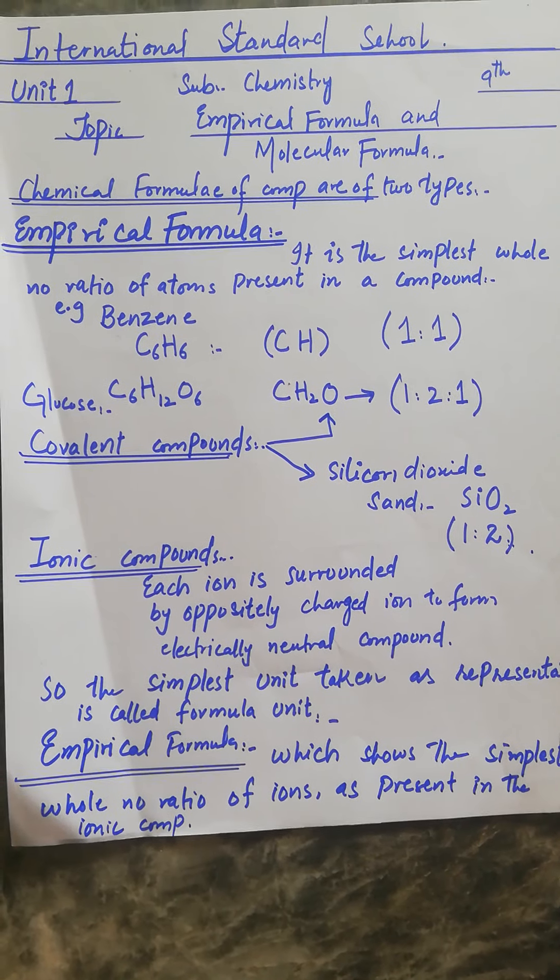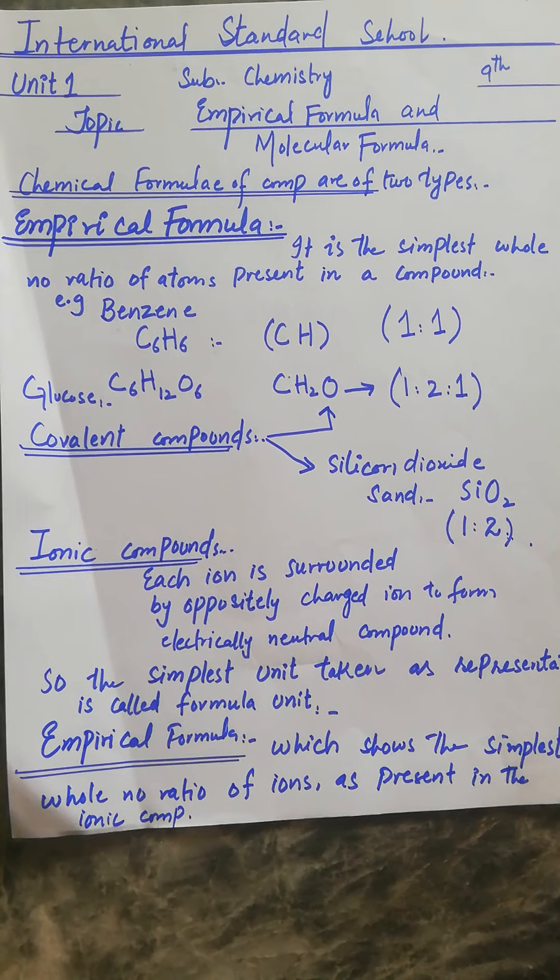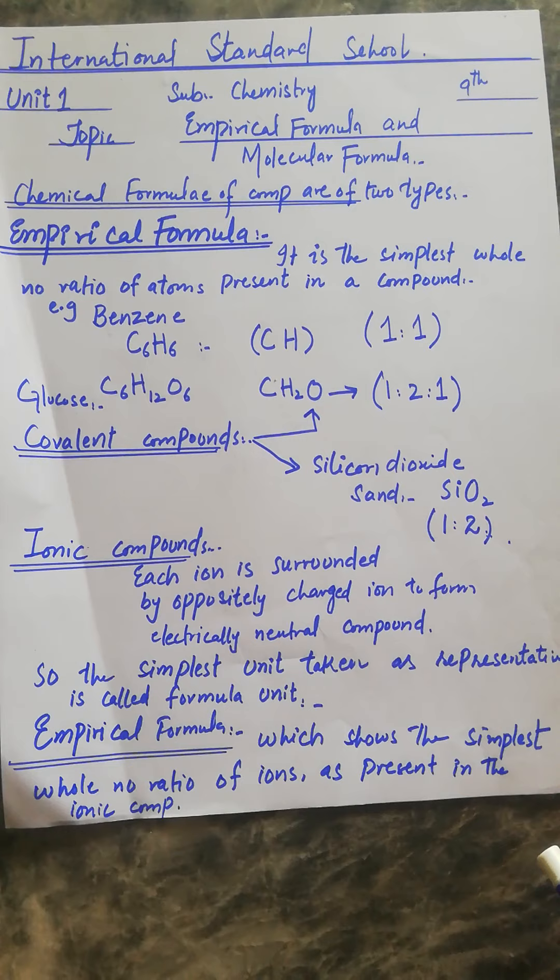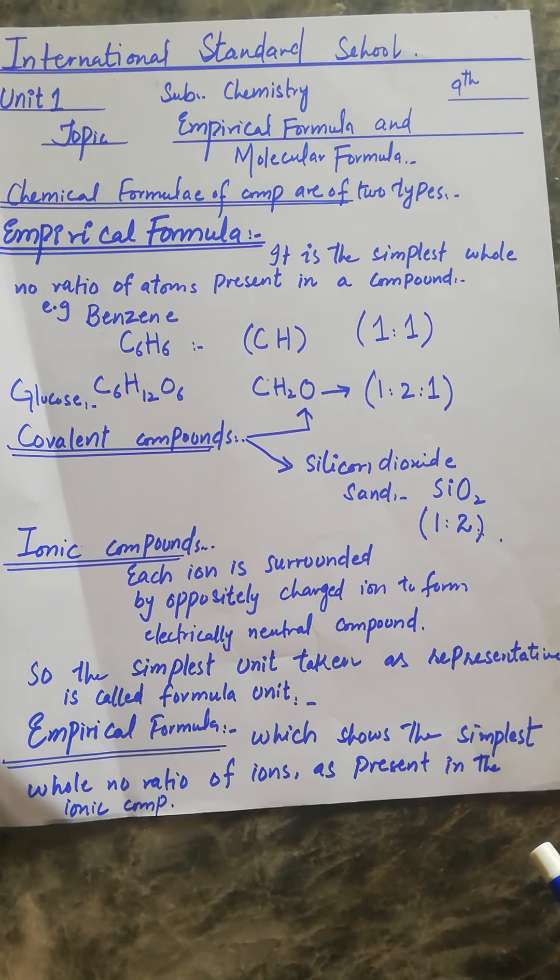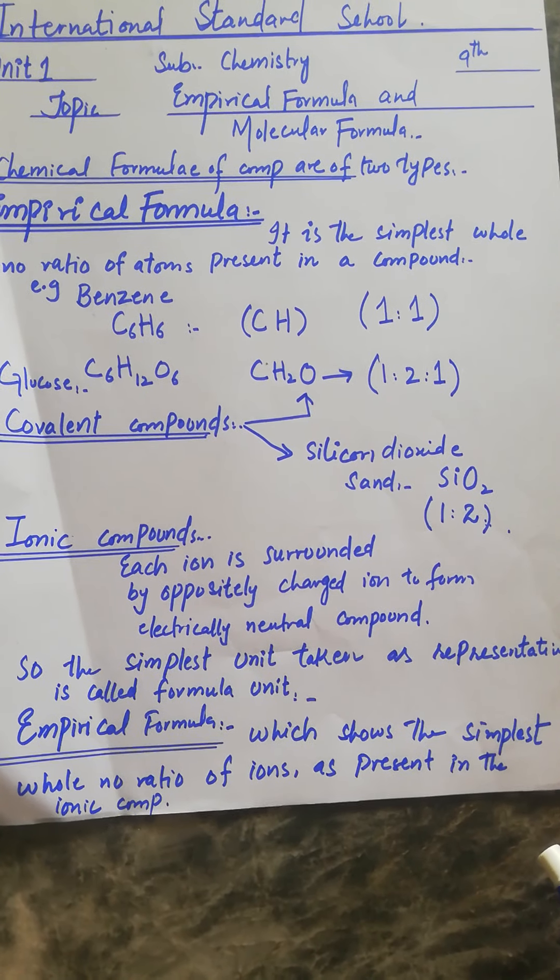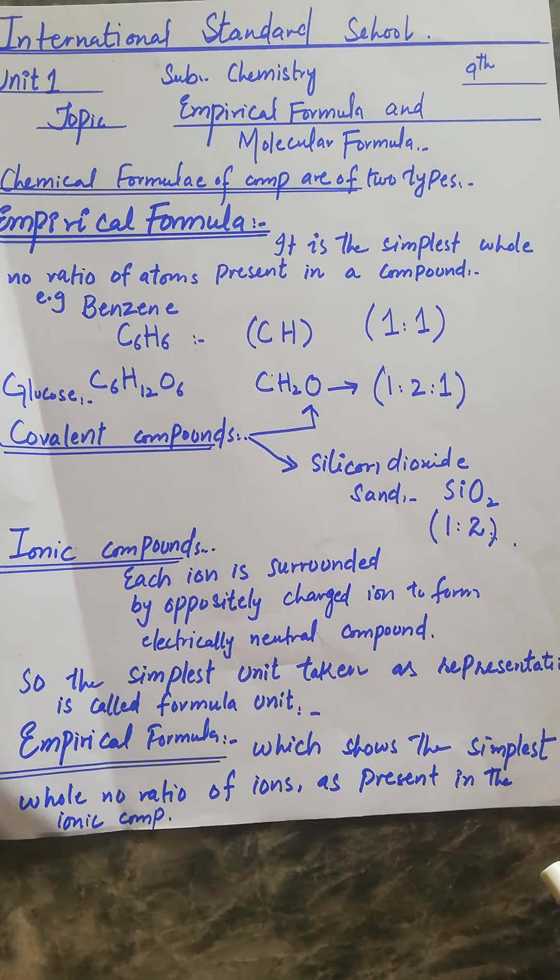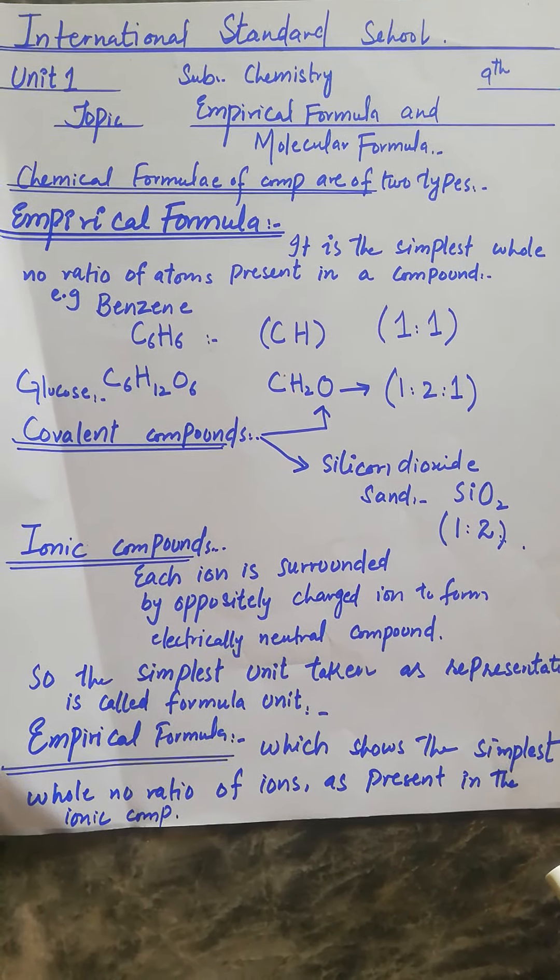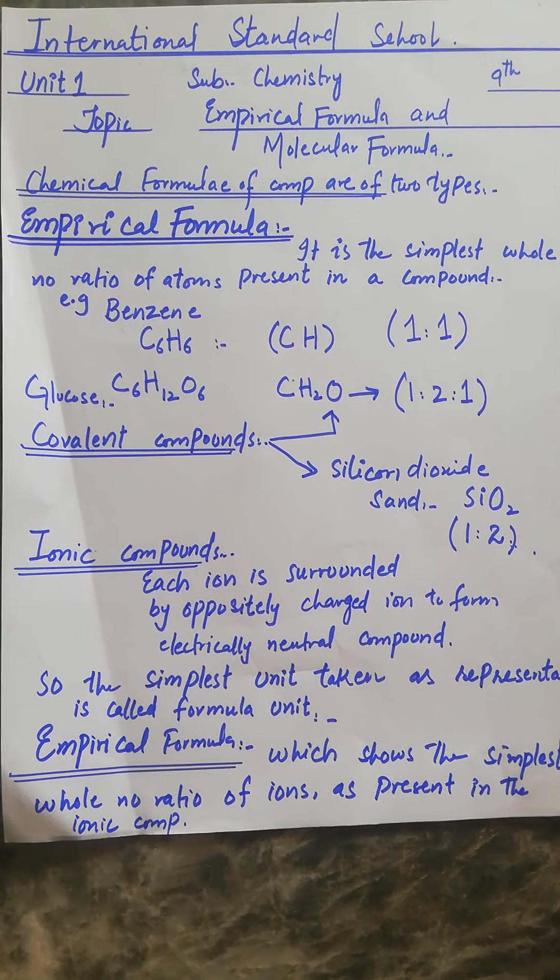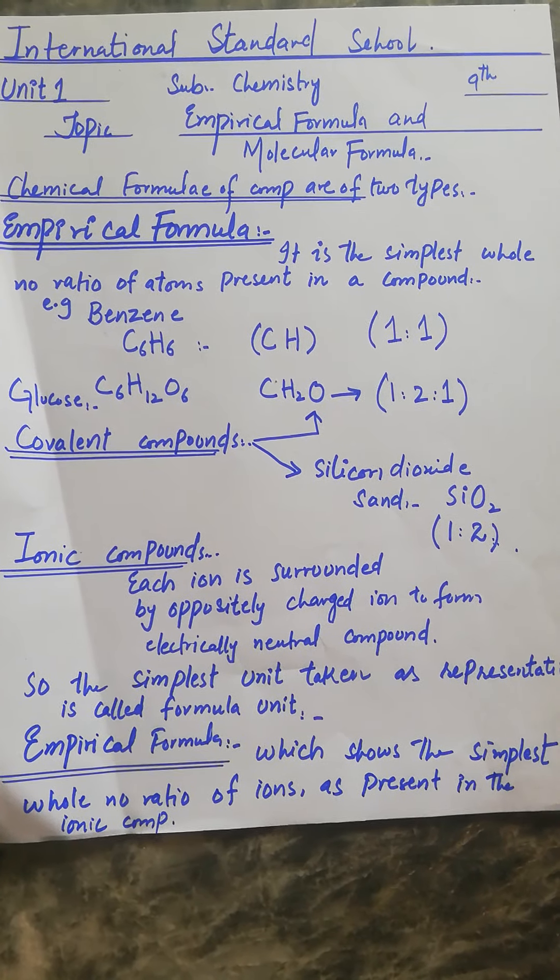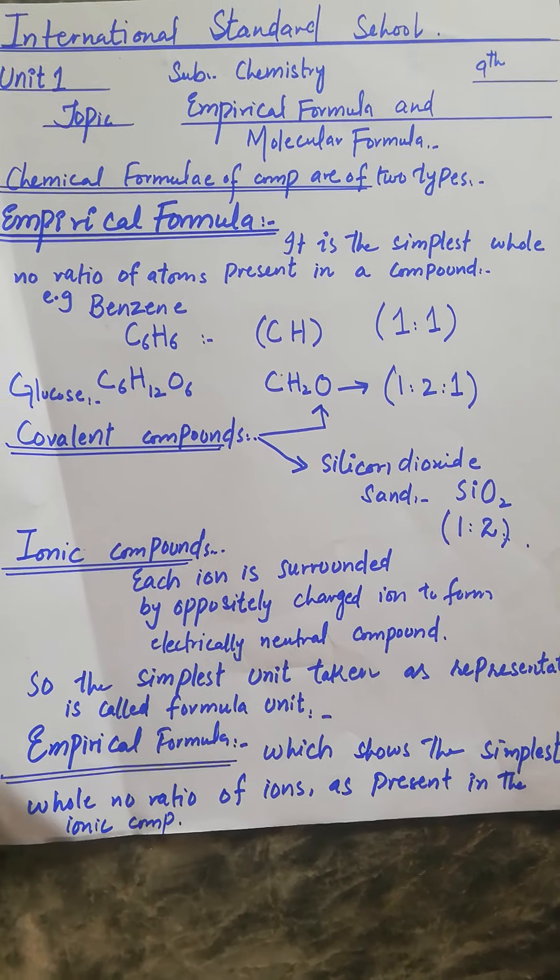First of all, we will define the empirical formula. It is the simplest whole number ratio of atoms present in a compound. In any compound, the elements and their atoms have a simplest whole number ratio between them, which is called the empirical formula.